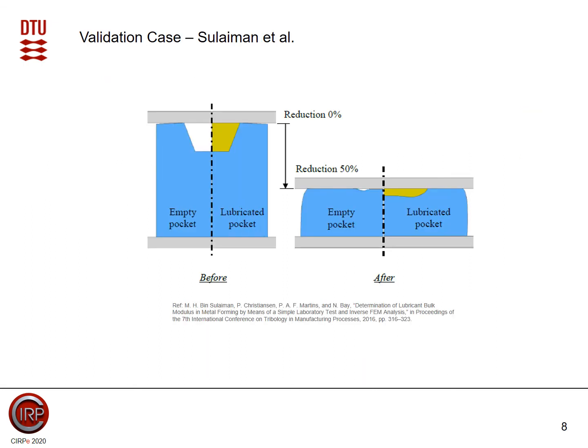Before I talk about the simulations themselves, I would like to talk about our validation case, which are experiments conducted by our co-worker Dr. Sulaima. Essentially, they took simple cylinders — 20 by 20 millimeters — and added a lubricant pocket at the top. This gives a nice simulation case where we have pressure build-up and solid deformation, which is a good starting point to validate a model. One nice aspect is also that we have hydrostatic pressure, meaning the pressure will be the same everywhere, so it is actually simple to validate whether or not the fluid solver is doing a good job.